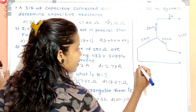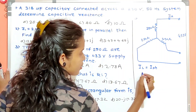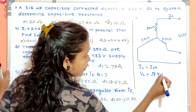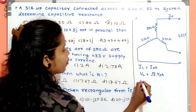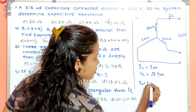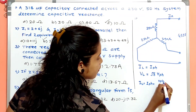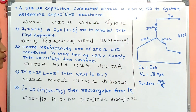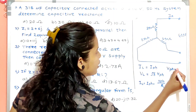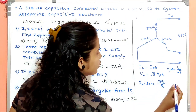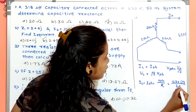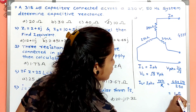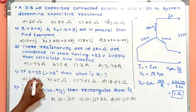In a star connection, line current Ia equals phase current, and line voltage VL = √3 × Vph. So Vph = VL / √3 = 4.33 / √3. Then Ia = Iph = Vph / R = 4.33 / (√3 × 250). The answer is 1 ohm (1 A), so answer is B.